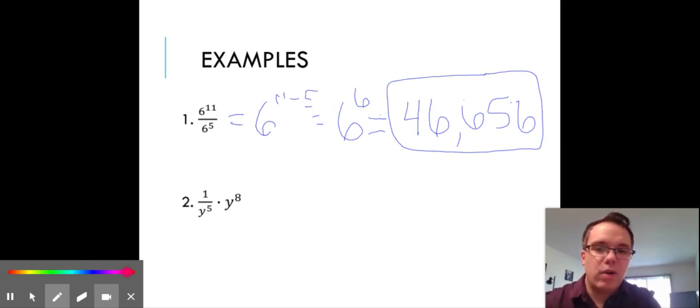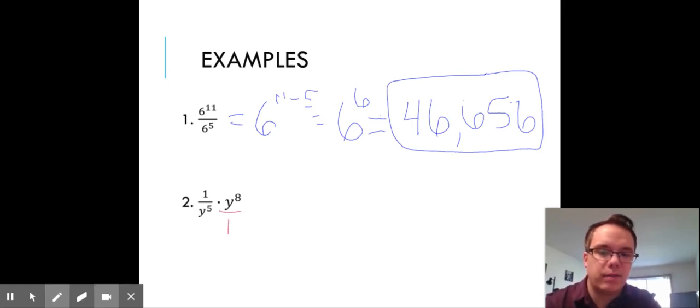For our second example, it looks like we're multiplying, and remember when we multiply two fractions, if we have something that's not a fraction, we can always put it over 1, and we're going to multiply straight across.